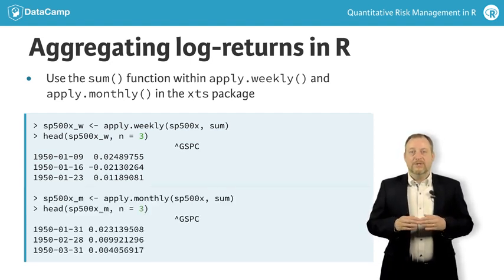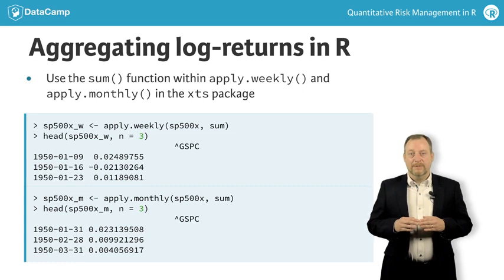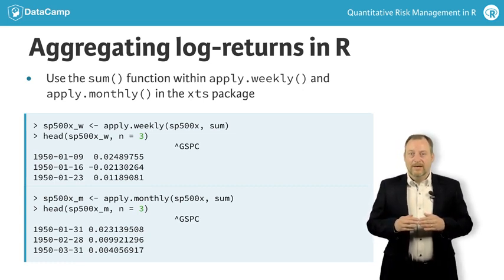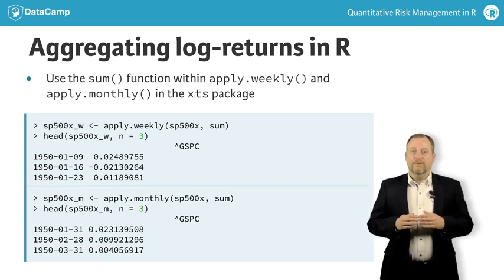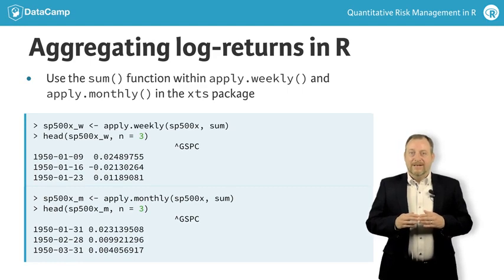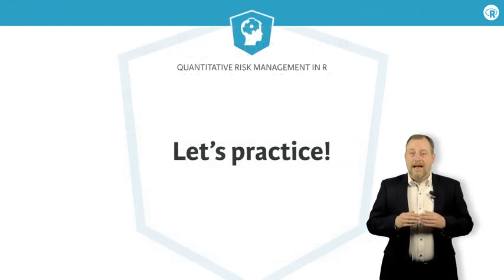Now the date stamps are the last days of each calendar month. Note that if you have a multivariate time series containing, for example, multiple stock prices, you have to apply the function colSums instead of sum. Look out for an example of that at the end of the next exercise. So now it's time to practice aggregating log return series.